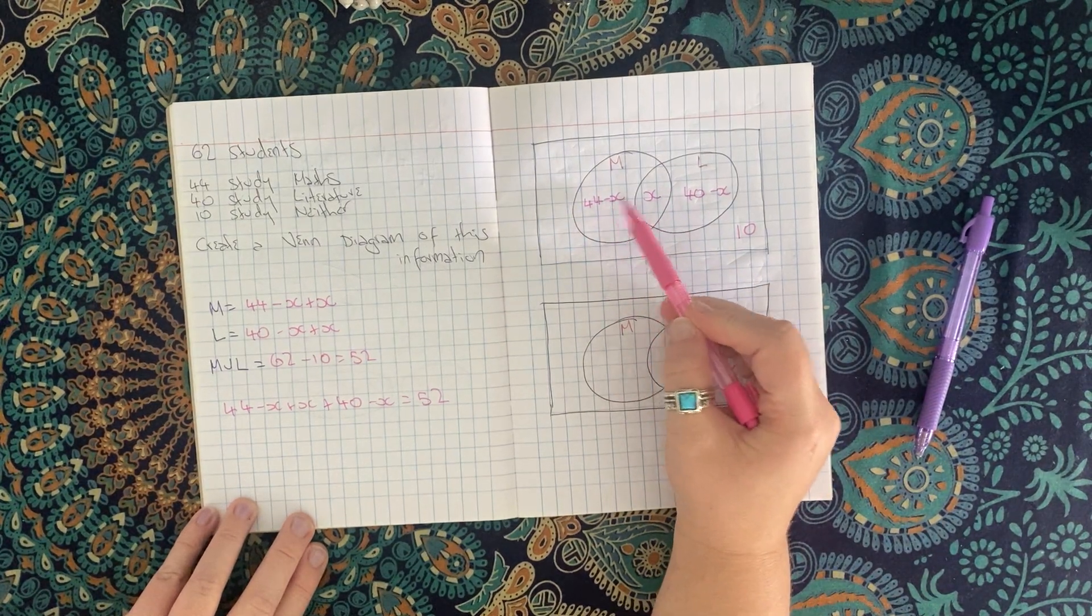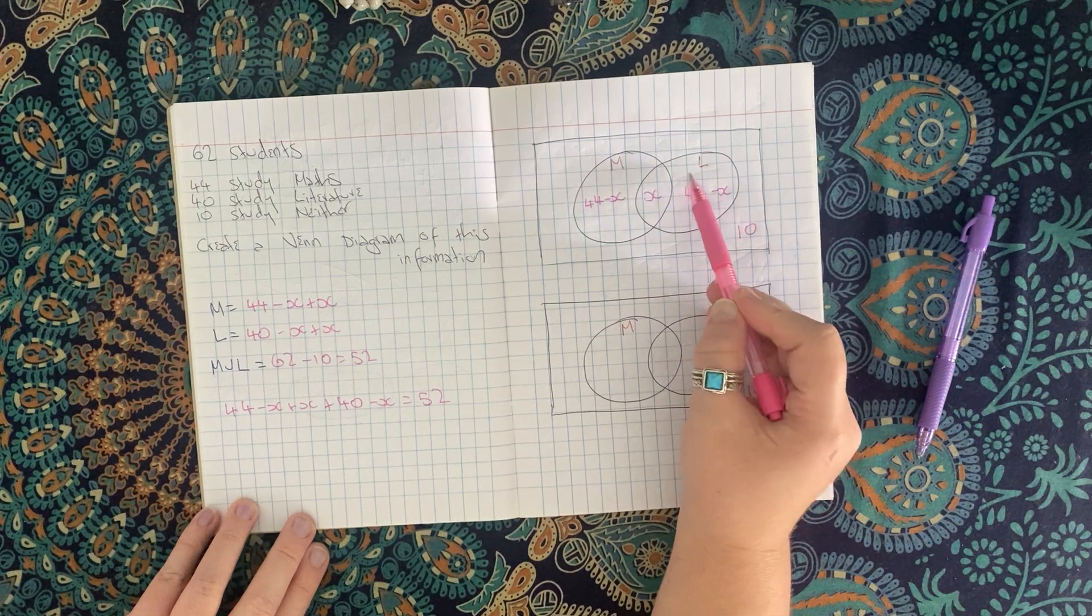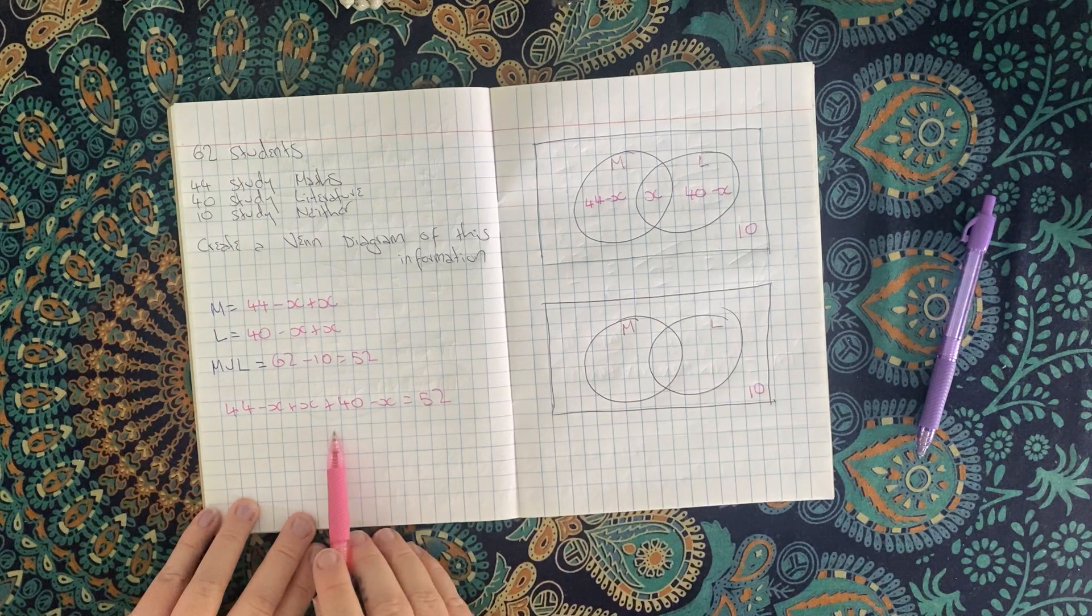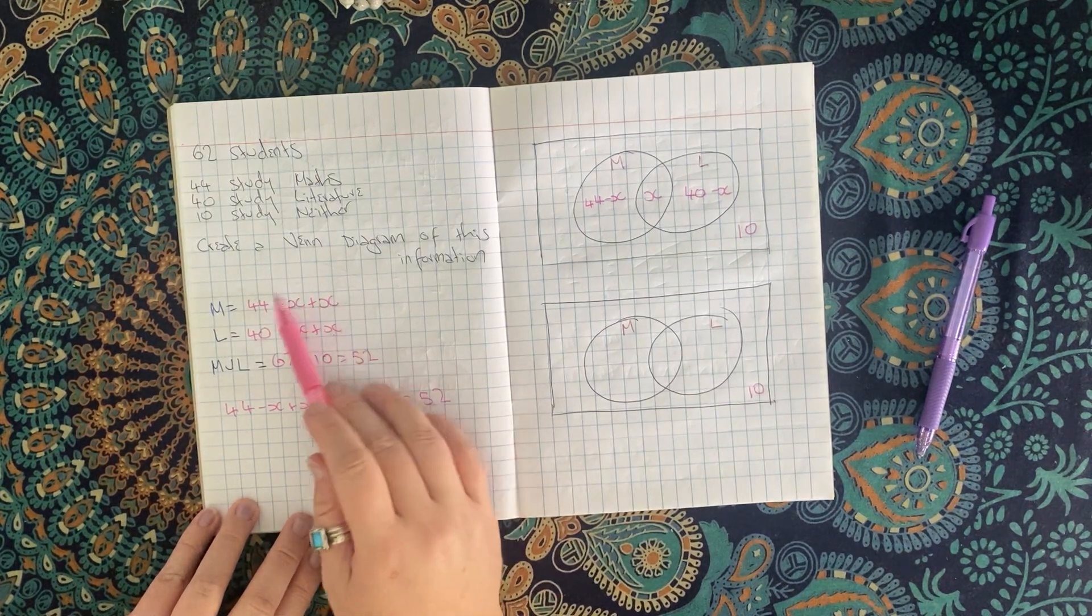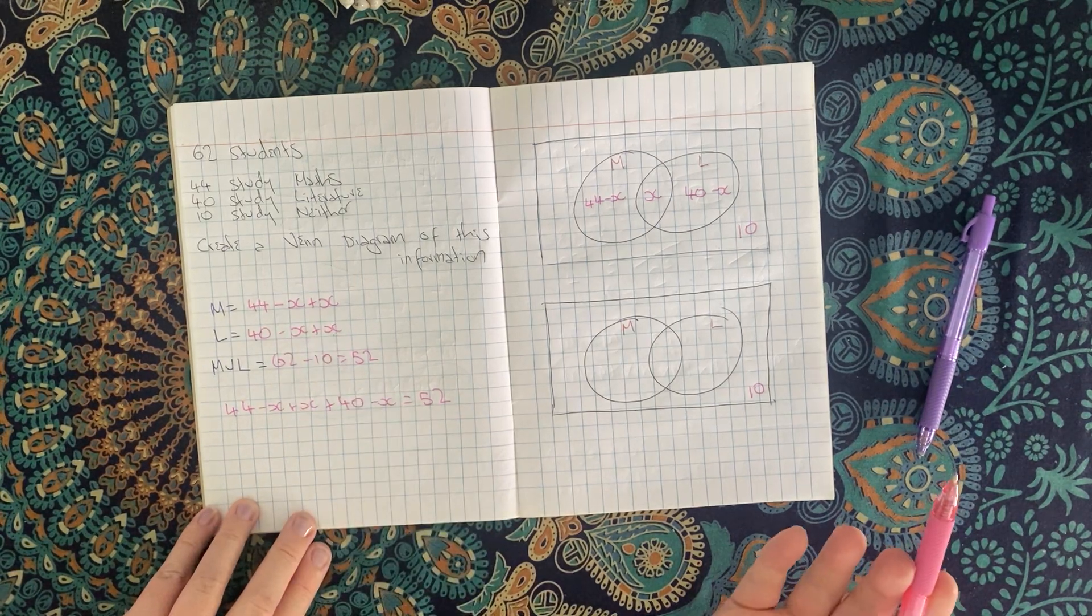So I've written them out like this just for the sake of having an X as part of the equation because, you know, subtract an X, add an X, it cancels out.